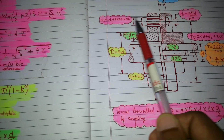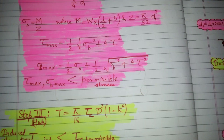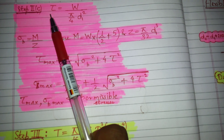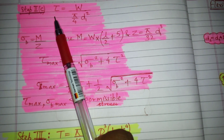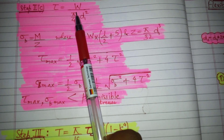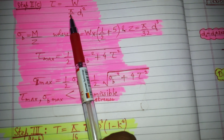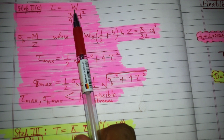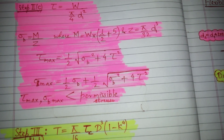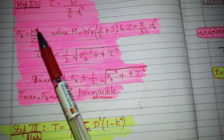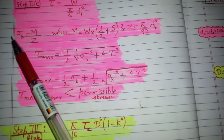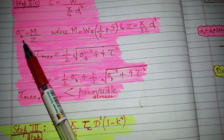Once we have these dimensions, we look at the stresses. We need to find the direct shear stress in the coupling halves, which equals W divided by pi by 4 into D1 squared, where W is the bearing load on the pin and D1 is the diameter of the pin. Then we find the bending stress on the pin.